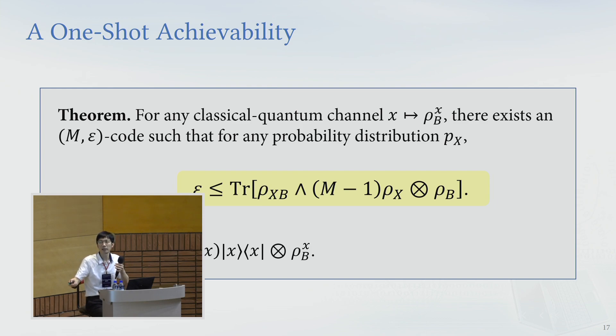And this rho x, the right-hand side, the product of the marginal, rho x times the product rho b, and it's capital M minus one. That's the main result. And this quantity is monotonically increasing in the argument. So if you want to send more message capital M, then the upper bound will increase, which makes sense.